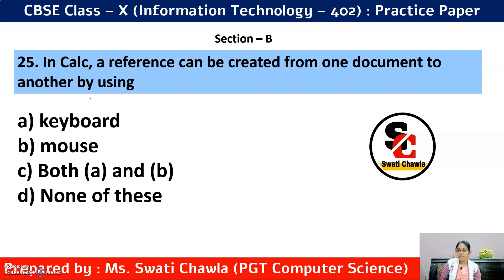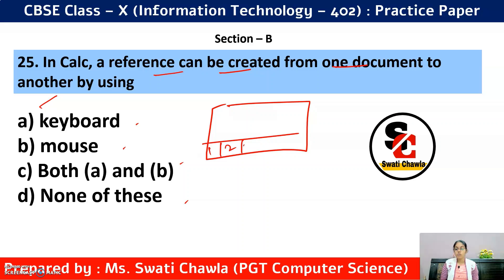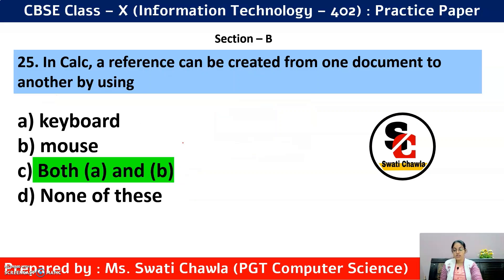Question 25: In Calc, a reference can be created from one document to another by using dash. Options: Keyboard, Mouse, Both A and B, None of these. To directly access a reference across sheets, you can use both keyboard and mouse. So the correct answer is option C — Both A and B.